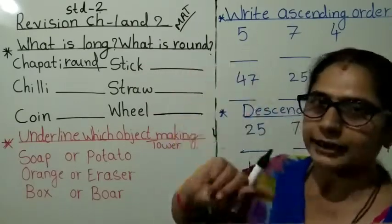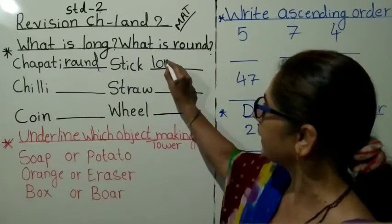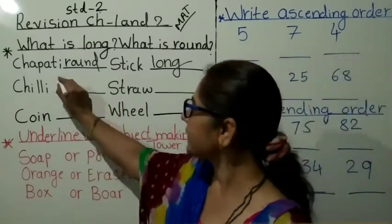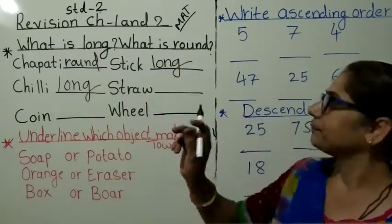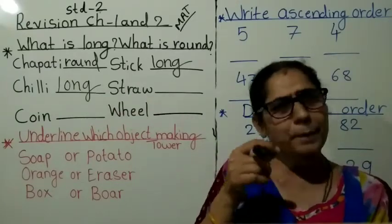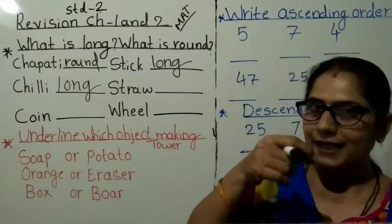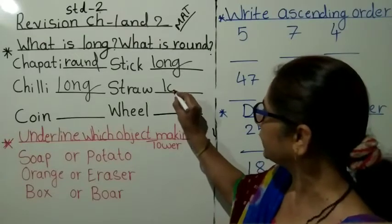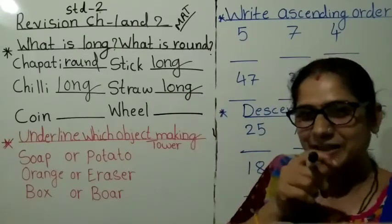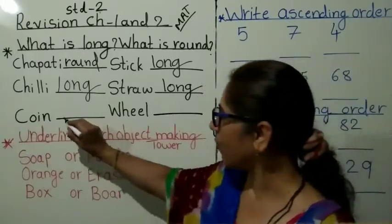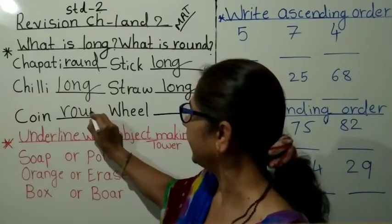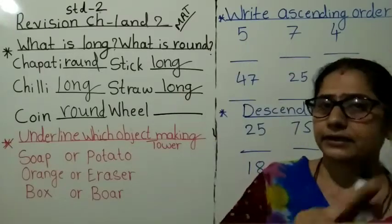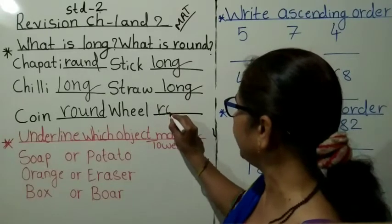Now S-T-I-C-K, stick. लाकड़ होता है न, stick. That one is L-O-N-G, long. Now chili, C-H-I-L-L-I, chili. मर्चु होता है न, chili? That one is L-O-N-G, long. Then S-T-R-A-W, straw. आपको पहले पिछले वडिये में इसब में बताया था, practically. Straw, पीते है न, that sugar cane juice. Long, L-O-N-G, long. Now coin, coin is round. Coin is R-O-U-N-D, round. Now W-H-E-E-L, wheel means पाइडा बोलते है न, तो वेहिकल्स में होता है. That one is round, R-O-U-N-D, round.